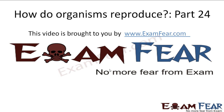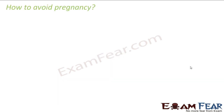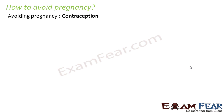This video on how do organisms reproduce is brought to you by examfear.com. The question is: if we want to limit the number of children, the female should not get pregnant unnecessarily. The process or phenomenon of avoiding pregnancy is known as contraception.